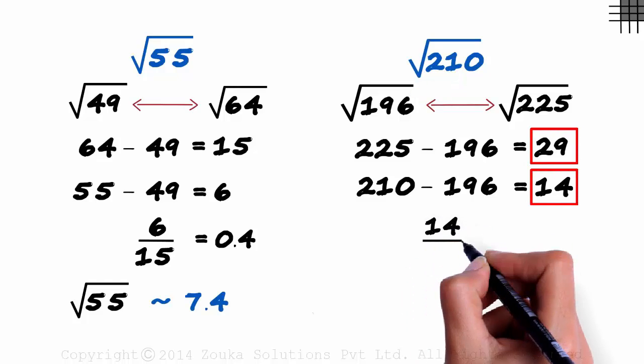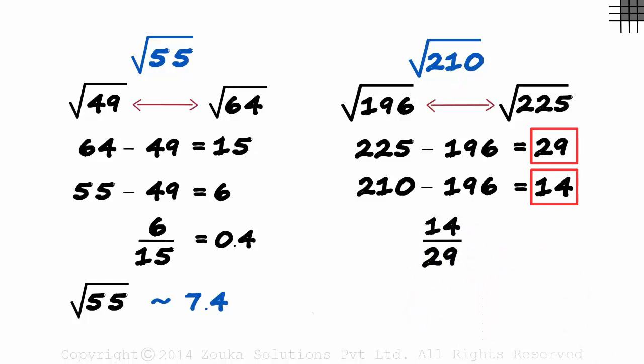14 over 29 is what we are interested in. 14 over 28 would be exactly half. As the denominator is slightly higher than 28, this fraction would be slightly lesser than half.